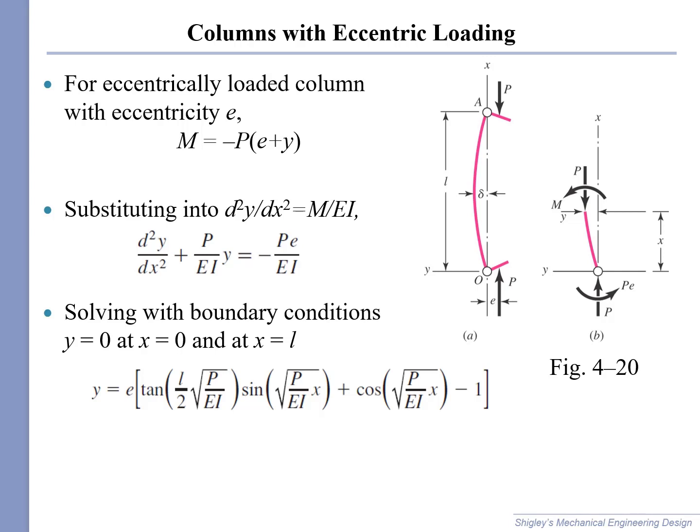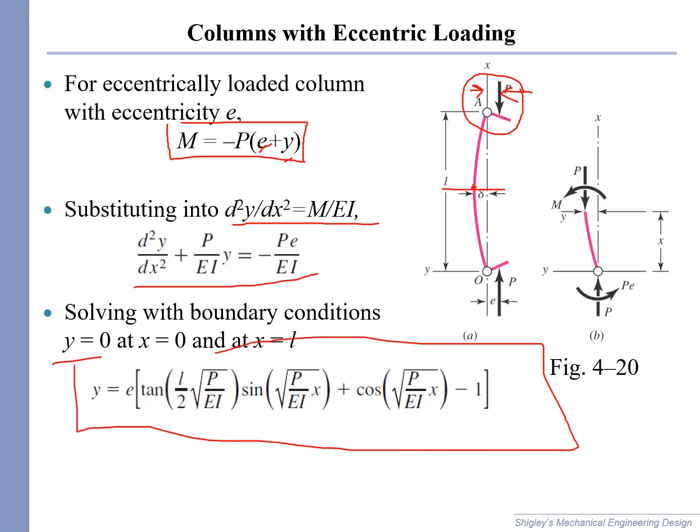For eccentrically loaded columns, what we are saying is that instead of the load being applied at the centroid, we are applying the load at some offset eccentricity E. So it's offset a bit, and that gives this load an initial moment arm before the column even buckles. And then, as the column buckles, the moment arm at the midpoint of the buckle is magnified by the deflection of the column itself. So the moment becomes the applied load times the eccentricity plus the deflection. You plug that moment into the deflection equation, you get a second order differential equation. You solve that with the boundary conditions, and you get this interesting formula which is shown here.